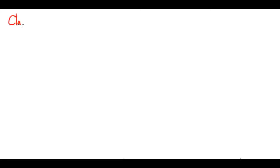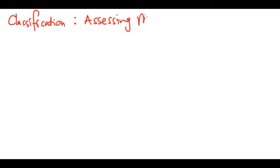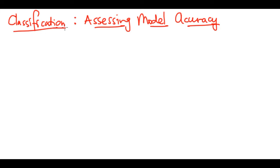This is going to be the last theoretical video for this course — we're moving on to the lab in the next video. We want to talk about the classification setting: how do we assess model accuracy in classification? In the previous video we used linear regression as a simple example and talked about test MSE and training MSE, but in classification we do not have that because what we are predicting are classes, meaning our y's are qualitative, not quantitative.